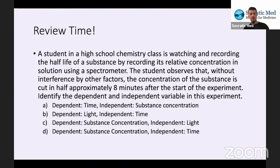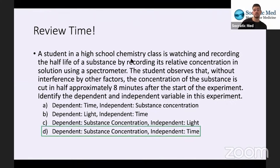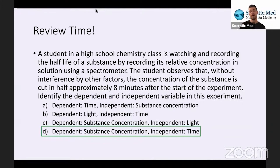Let's review. A student in a high school chemistry class is watching and recording the half-life of a substance by recording its relative concentration in a solution using a spectrometer. The student observes that without interference by other factors, the concentration of the substance is cut in half approximately eight minutes after the start of the experiment. Identify the dependent and independent variables. Remember: the independent variable is what is being manipulated or changing, and the dependent variable is what is changing because of the independent variable.